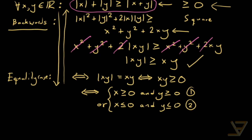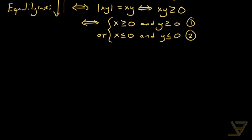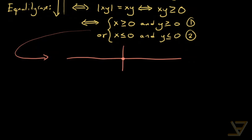That takes care of it for two variables, but we want to state the inequality for n variables as well as the equality case. Before we do that, I just want to mention what this equality condition means geometrically. Geometrically, we have the number line with zero in the middle, split into two halves each including zero. What we're saying is that x and y are either both on the right side or both on the left side. That's going to be the general idea behind the equality case of the general triangle inequality.